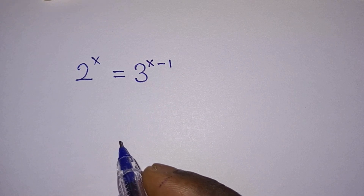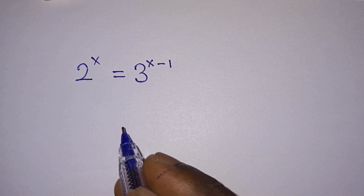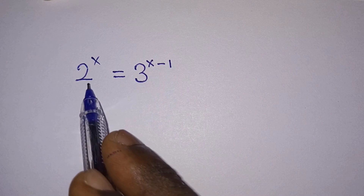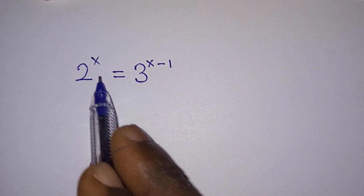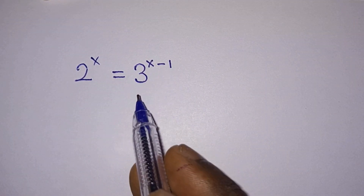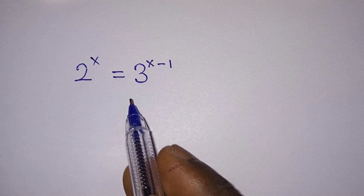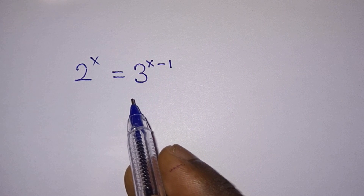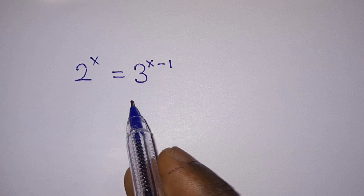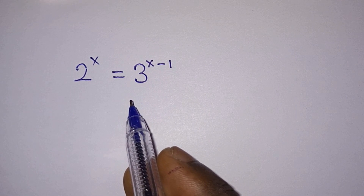Hello everyone. In this video we will solve for the value of x in this exponential equation: 2 to the power x is equal to 3 to the power x minus 1. I'll be solving this problem in two different ways, and I believe you'll really love the second method, so watch the video to the end. Subscribe to my channel and let's get started.